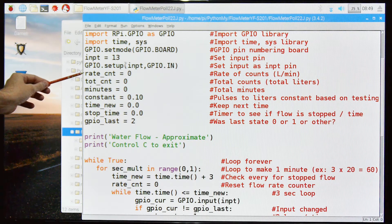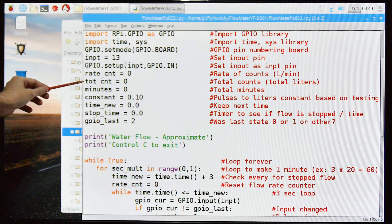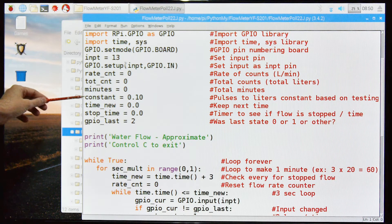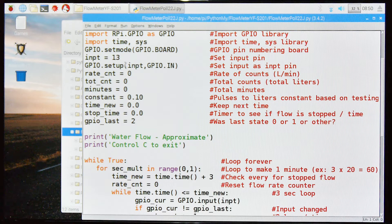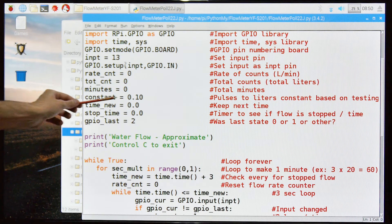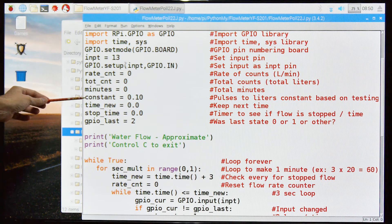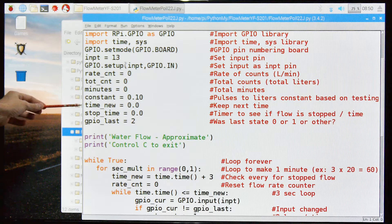We're going to use these variables: rate count is zero. So this is the total number of liters per minute. This is the total of liters per minute. This is the constant. This is the pulses to liters conversion, if you will. Based on your testing, this is just a very rough number. I've tried different numbers in different programs.